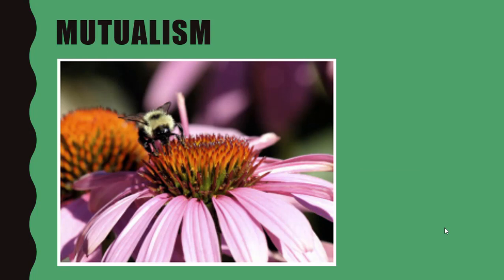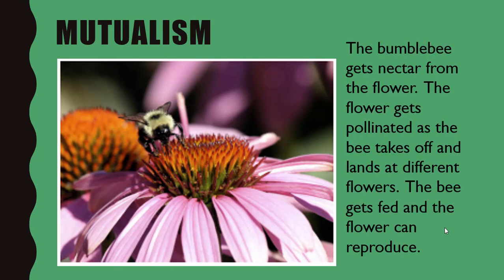We're going to start with mutualism. Check out your picture — you'll notice the bumblebee and the flower. The bumblebee goes to the flower to get energy from the nectar. As the bumblebee is on the flower, pollen gets onto its body, and when it lands at a different flower, some of that pollen shakes off. That helps the flowers get pollinated and helps the bee get food.